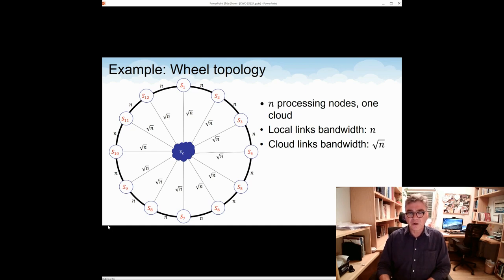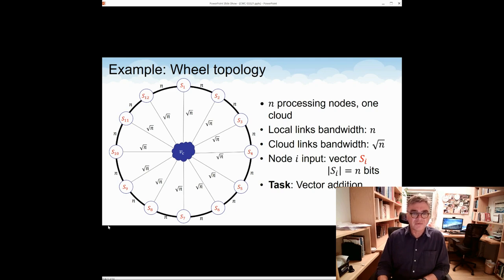Now, regarding the problem, we assume that each node holds initially a vector of n bits. Node i holds a vector si. And the requirement is to compute the sum of all these vectors. So by the end of the computation, some node needs to hold or output the vector, which is the sum of all the si's. So this is the game we play.